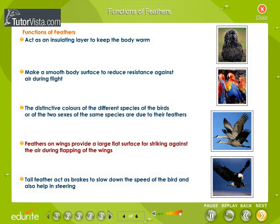Feathers on wings provide a large flat surface for striking against the air during flapping of the wings. The tail feathers act as brakes to slow down the speed of the bird and they also help in steering.